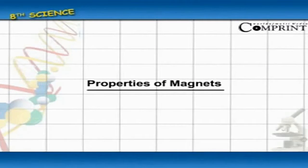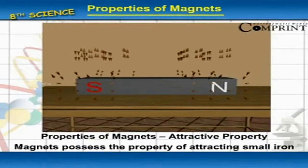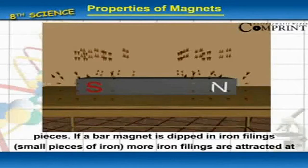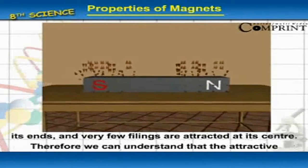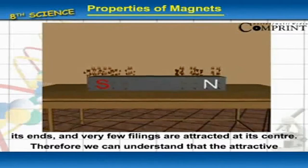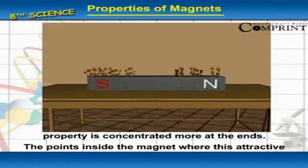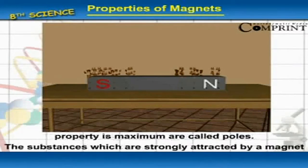Properties of Magnets. Attractive Property: Magnets possess the property of attracting small iron pieces. If a bar magnet is dipped in iron filings, more iron filings are attracted at its ends and very few filings are attracted at its center. Therefore, we can understand that the attractive property is concentrated more at the ends.